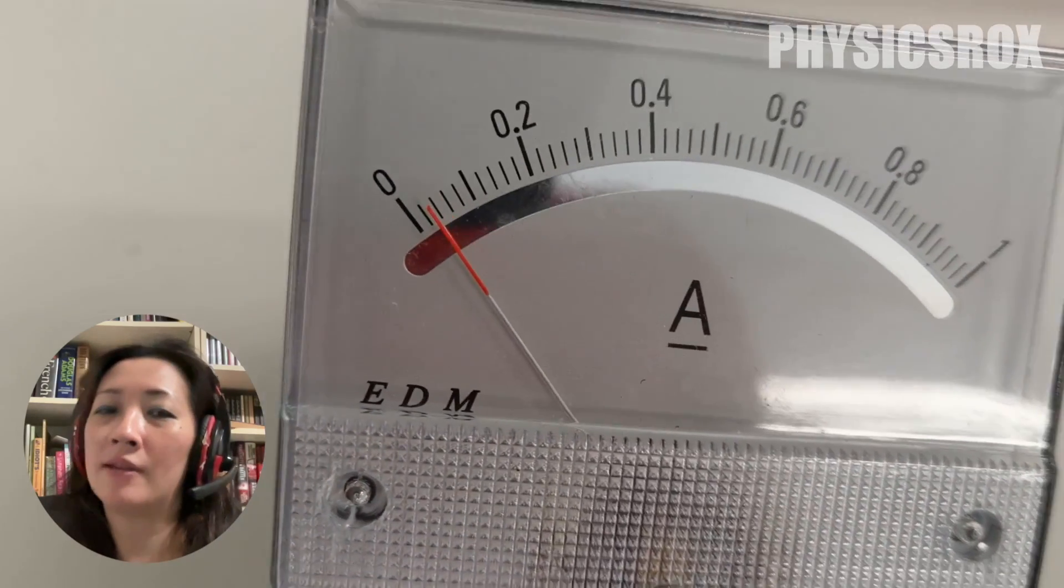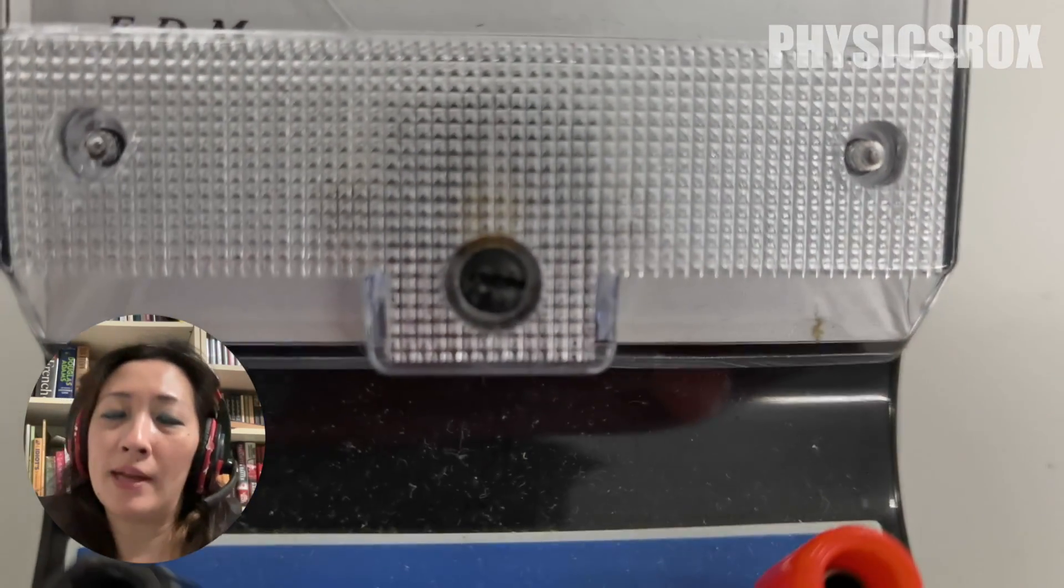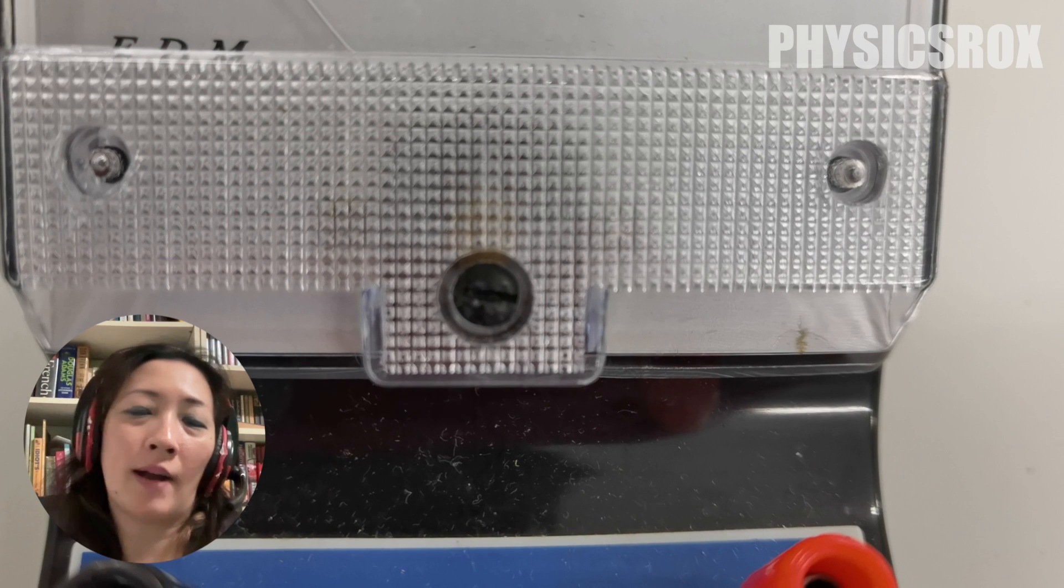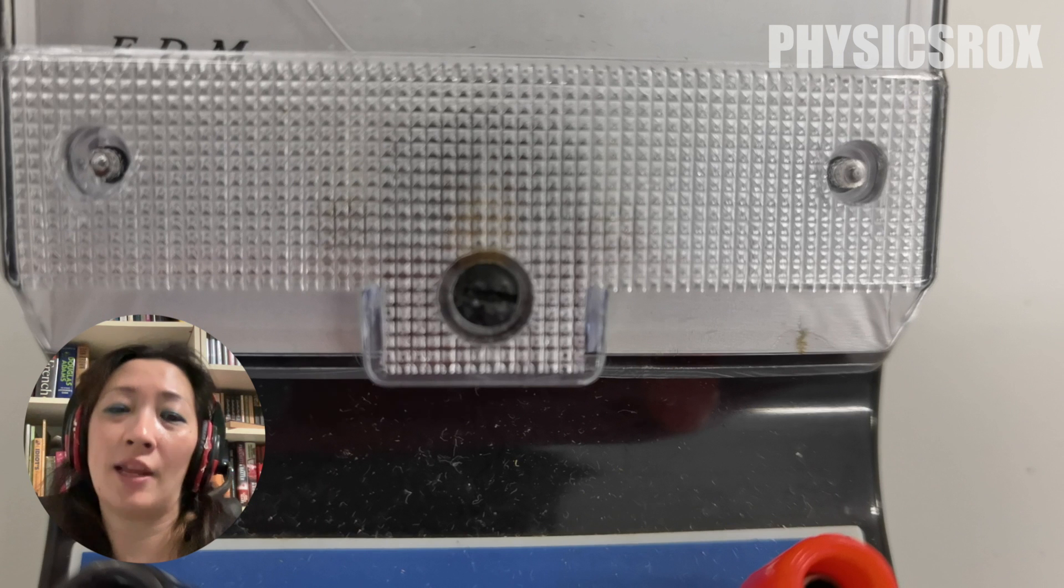So for analog ammeters and voltmeters, you'll find there's normally a screw in the middle of the device. Sometimes it's black, sometimes it's white, sometimes it's silver in color depending on the ammeter or voltmeter that you have.